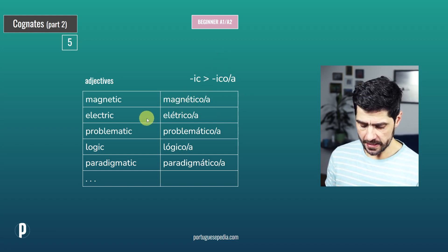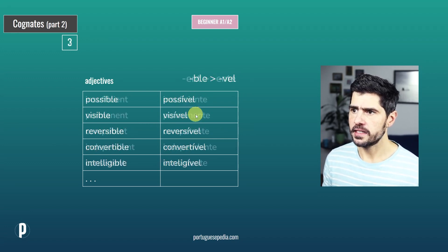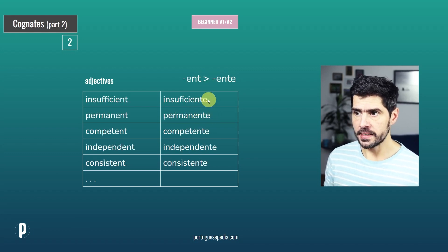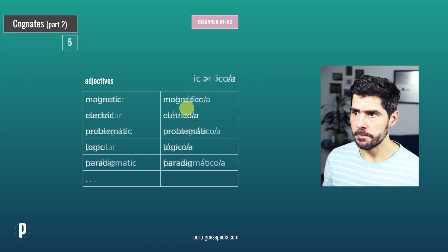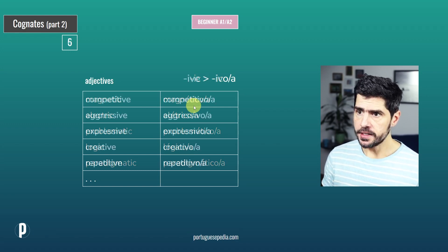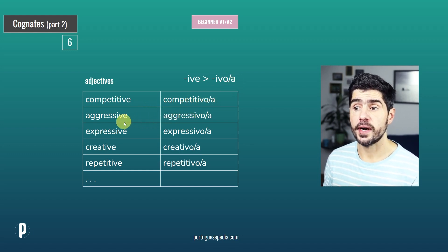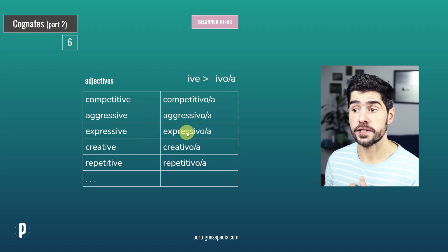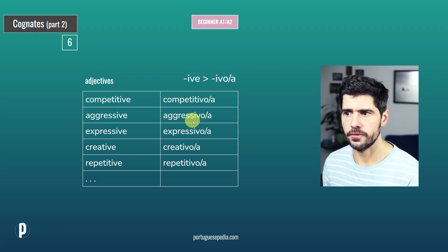I'm marking gender here. In previous groups, adjectives ending in a consonant or in the vowel E have the same form for masculine and feminine. But in this case, the word ends in O for masculine or A for feminine. Group number six: -IVE in English becomes -IVO or -IVA in Portuguese. So competitive — competitivo, competitiva. Aggressive — agressivo, agressiva. Expressive — expressivo. The stress is on the next-to-last syllable by default: competitivo, agressivo, criativo.